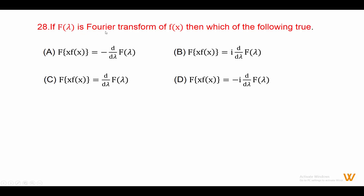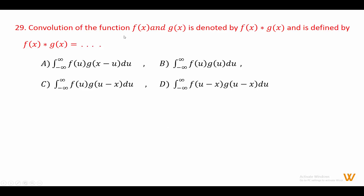Twenty-eight: if F(lambda) is the Fourier transform of fx — note that in some books the Fourier transform is denoted by f(s) instead of lambda — then the Fourier transform of x times fx equals minus i times d by d lambda of F(lambda). Answer is option D.